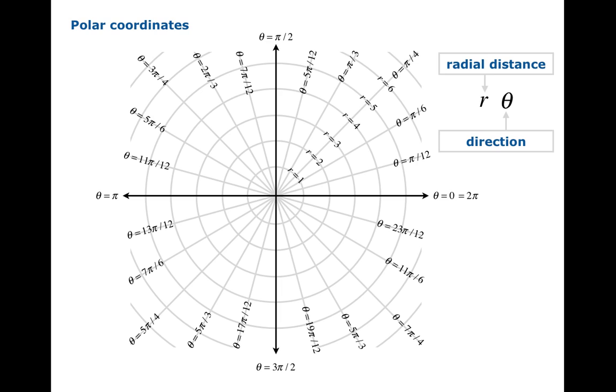You'll notice that once you get, once you sweep that theta coordinate around from zero to 2π, you arrive back to where you started. So there's a little redundancy here. Is this direction zero or is it 2π?